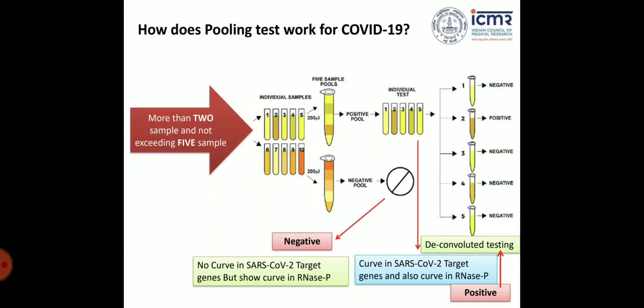For a positive result, there must be a curve in the target genes — E gene, RdRp gene, or N gene — and you should also have a curve in the RNase P internal control. One critical point here: imagine five samples are pooled and one sample's RNA was not extracted properly, or there is some inhibitor, but that patient may actually be positive. In this case you cannot clearly say whether the RNase P of that individual worked or not — that is a risk.